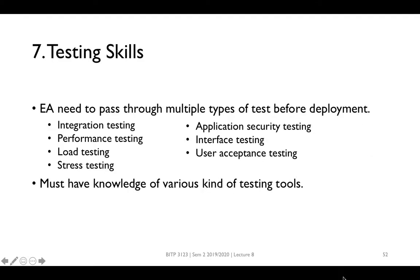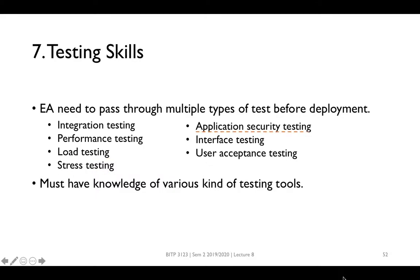EA needs to pass through multiple types of tests before deployment. The EA team responsible for performing testing must acquire multiple skill sets. These skill sets include integration testing, performance testing, load testing, stress testing, application security testing, interface testing, and user acceptance tests. It is essential for the team to know various kinds of tools to perform this testing.